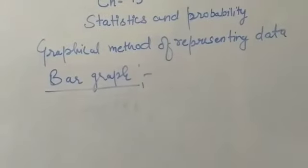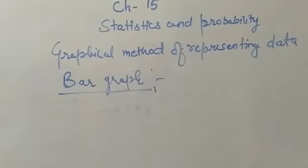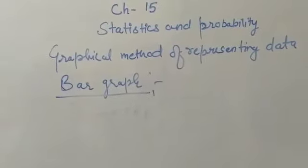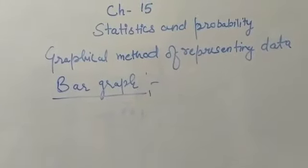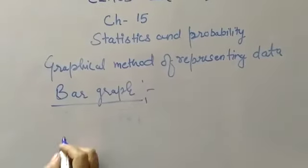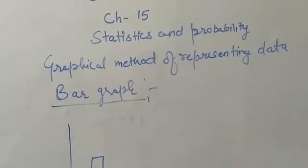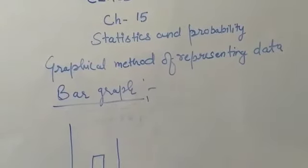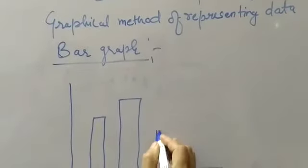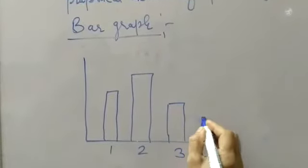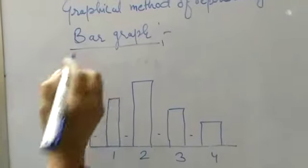A bar graph is a pictorial representation of numerical data by the number of rectangular bars of uniform width erected vertically from the same base line with equal spacing between them. Like rectangular boxes here, one for a particular value, three, four - means equally spacing between them.